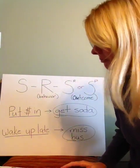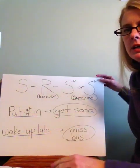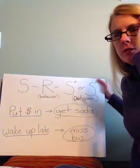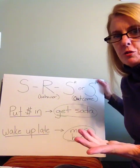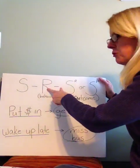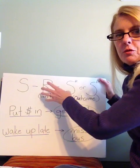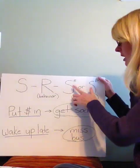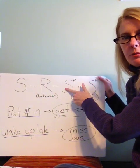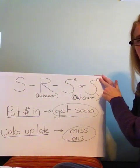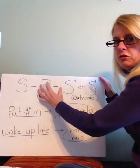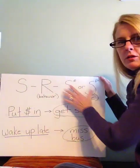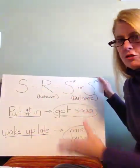For operant conditioning, what we have is SRS. There are stimuli that start a behavior — kind of where you are, what the situation is — and then the response, or R, is your behavior. So there's a behavior and there's an outcome. The outcome can either be an SR, which is a reinforcing stimulus, or an SP, which is a punishing stimulus. We're talking about this half of the three-term contingency.